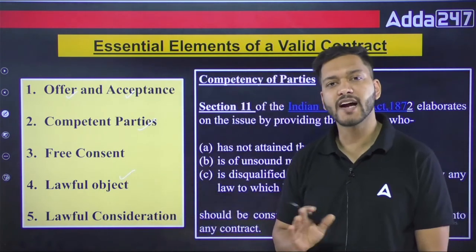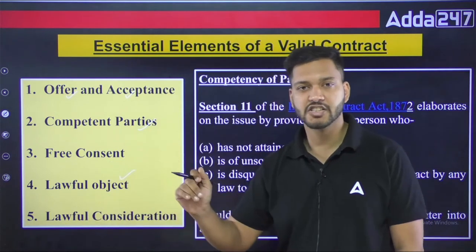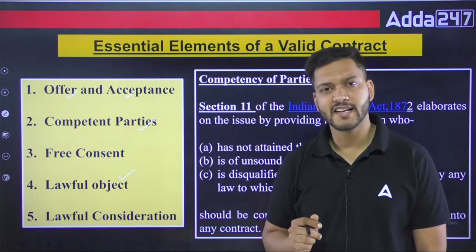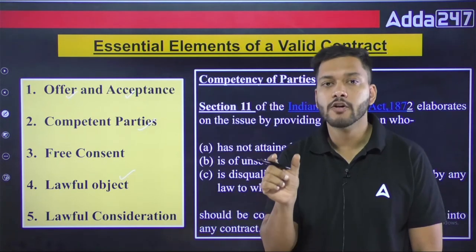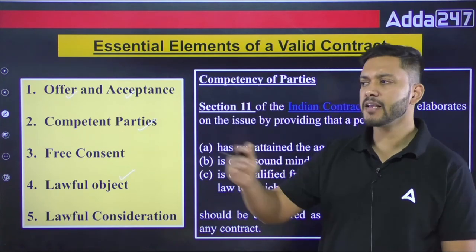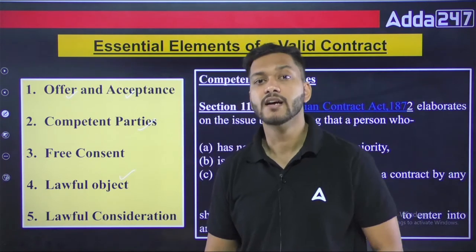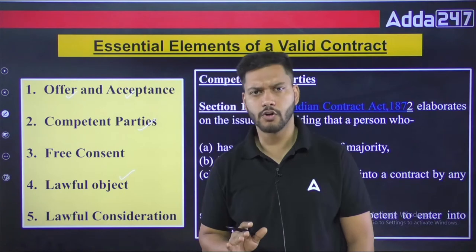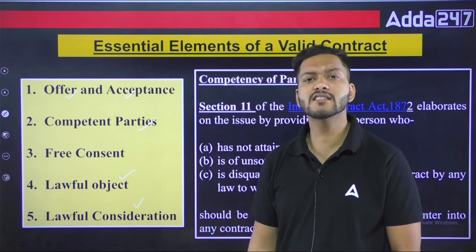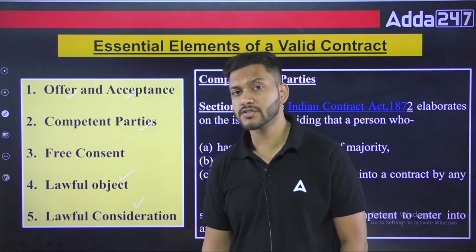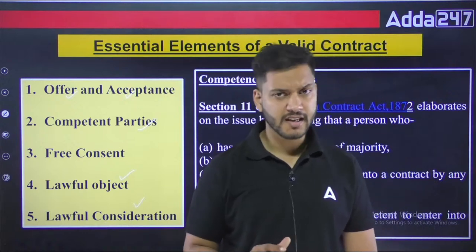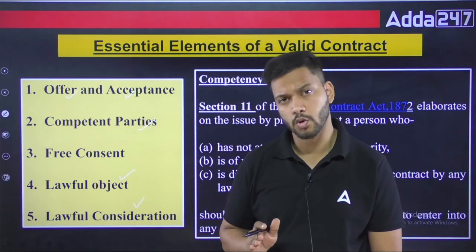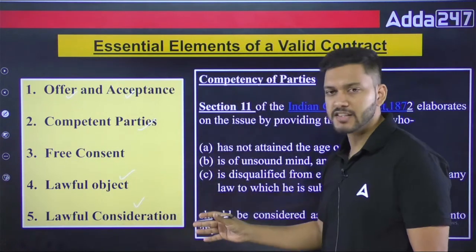The object of the contract must be lawful. For example, if two people contract to commit theft — that contract will never be valid because its object is unlawful. The object must always be lawful. Similarly, the consideration in the contract must also be lawful. These are some of the basic essentials of a valid contract.